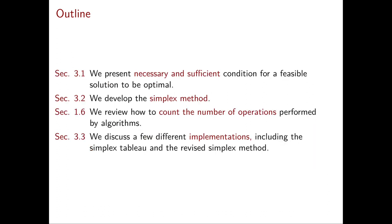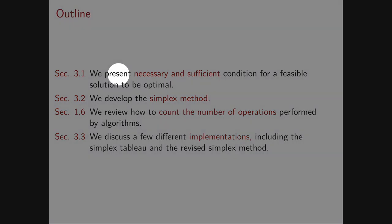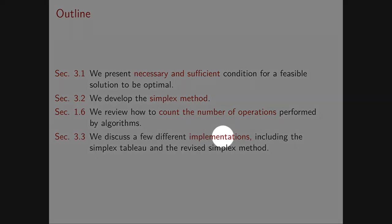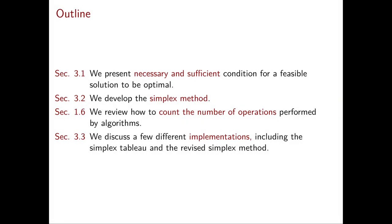This is our to-do list for this first part of chapter 3. First, we are going to present necessary and sufficient conditions for a feasible solution to be optimal. This is of fundamental importance because it allows us, in the simplex method, to know when we should stop because we have an optimal solution. Next, in section 3.2, we develop the whole simplex method. Then we discuss a few different implementations of the simplex method.